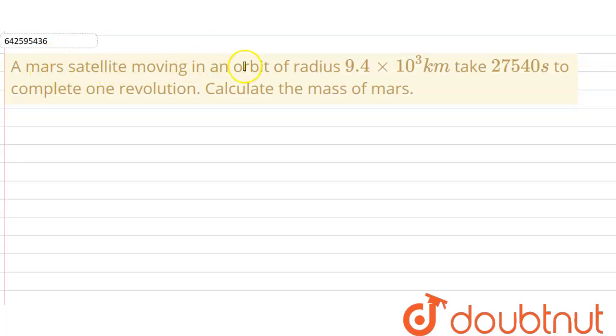A Mars satellite moving in an orbit of radius 9.4 × 10³ kilometers takes 27,540 seconds to complete one revolution. Calculate the mass of Mars. Okay, so we have been given the radius of the orbit of the satellite revolving around Mars...